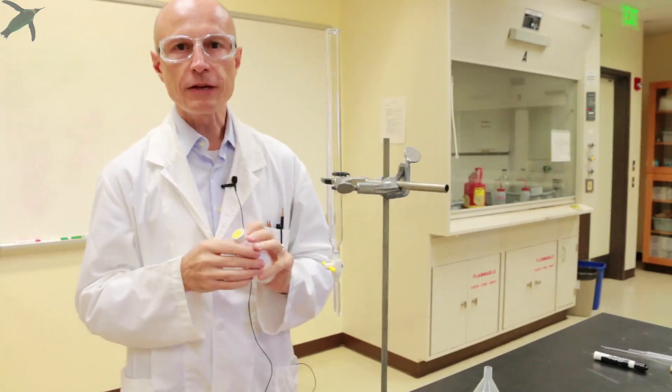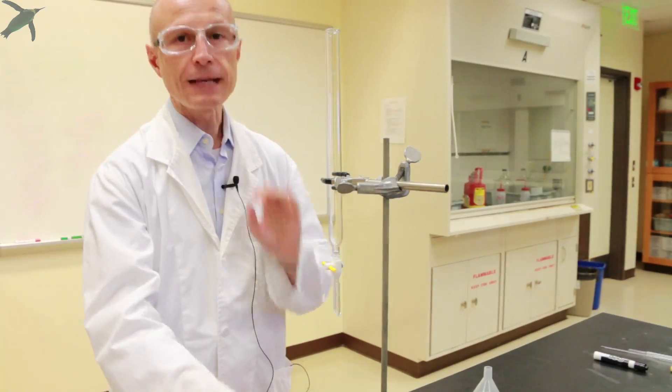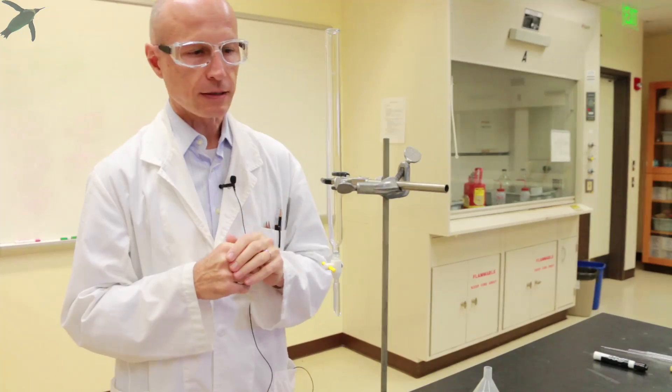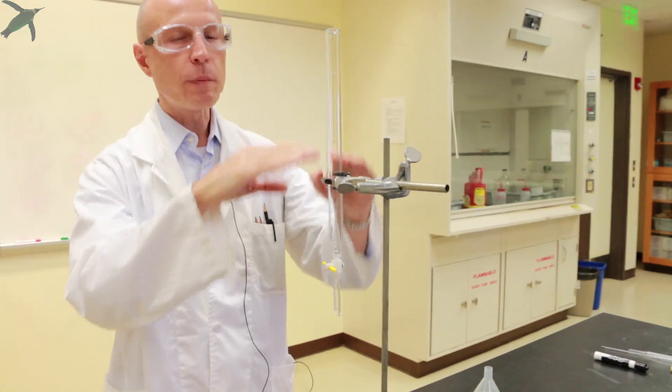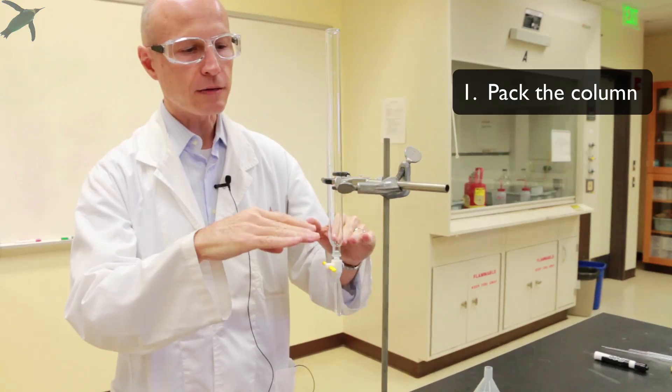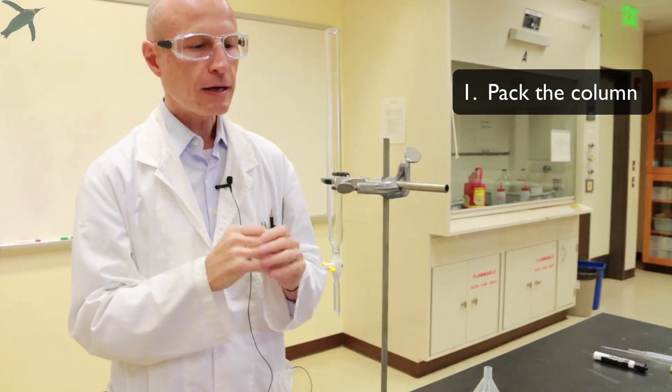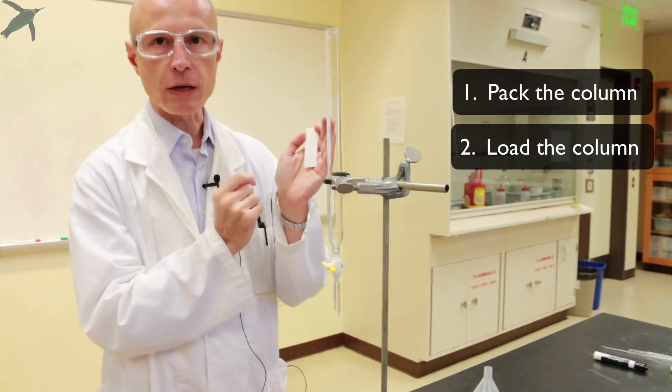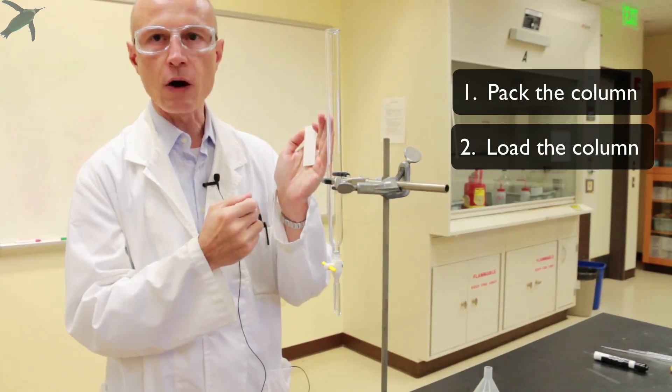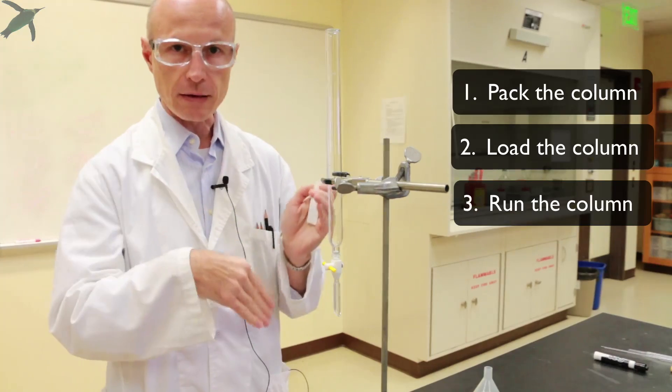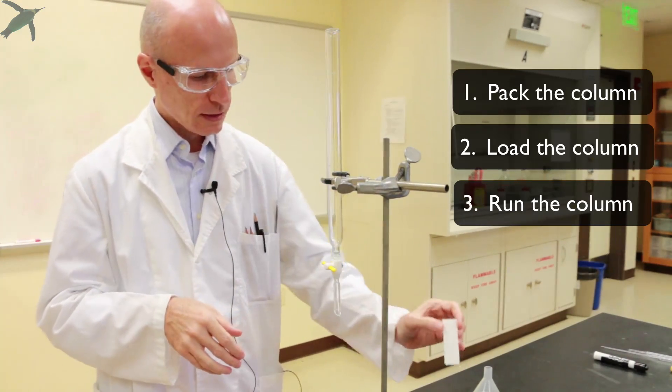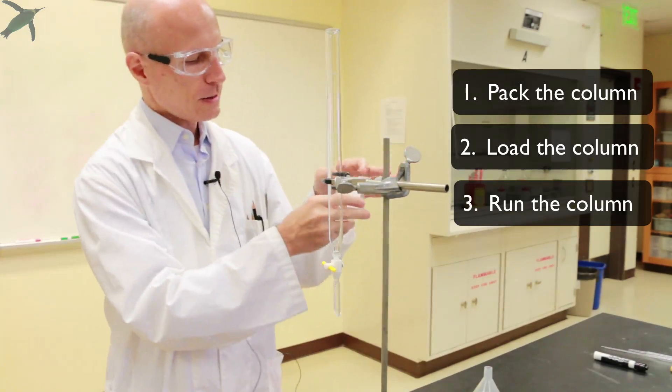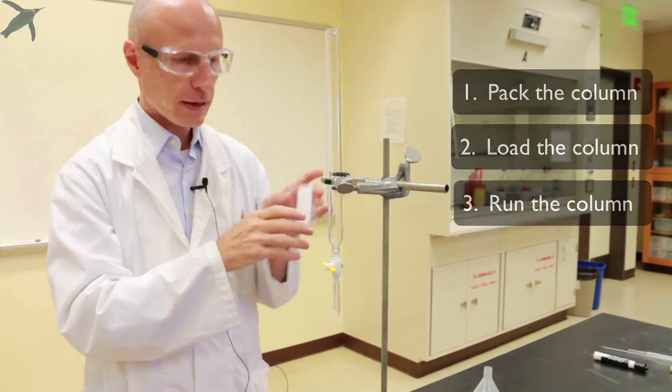Column chromatography is a very touchy technique. There are three phases in column chromatography. First you pack the column, that is you prepare it for your experiment. Then you load it, which is the equivalent of spotting the TLC plate, that is you put your compound on the silica gel. And then you run it, which is the equivalent of putting your TLC plate in the TLC chamber and running it up.